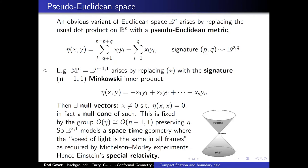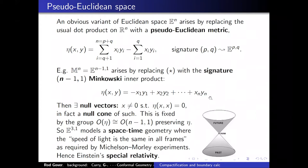Apart from Euclidean geometry, we have an obvious variant: pseudo-Euclidean geometry, where you replace the dot product with one of a given signature. My convention is that PQ means Q minuses. The most famous and relevant example is Minkowski space, which has one minus, so a Minkowski dot product looks like that — minus in the time direction and all pluses otherwise.